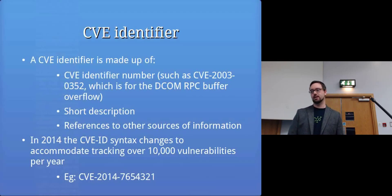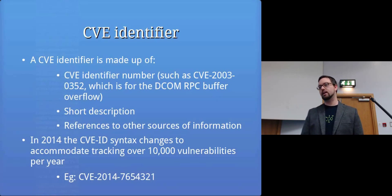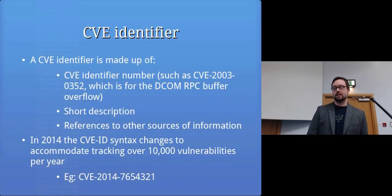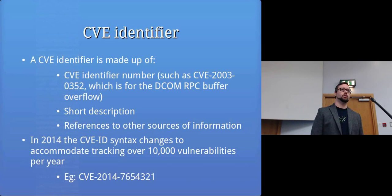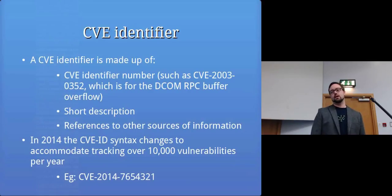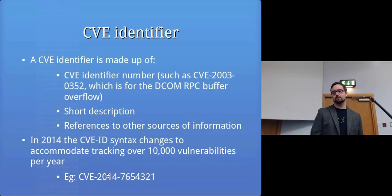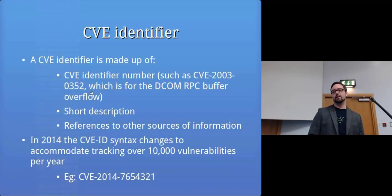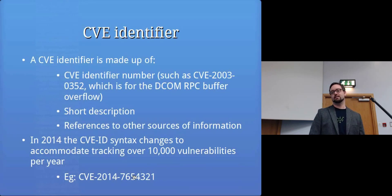The actual CVE identifier is made up of a number — for example, CVE-2003-0352, which is the RPC DCOM vulnerability we were just looking at. It includes a very short description and references to other sources of information, such as links where you'll find the actual exploit and more detailed information. Last year the syntax changed because before we were limited to four digits, and we were running out of numbers since more than 9,999 vulnerabilities were being discovered each year. So now you can put a longer number there.